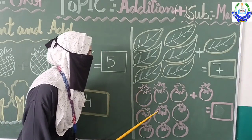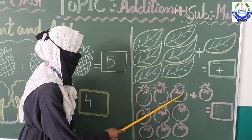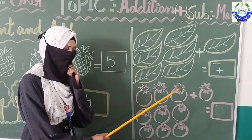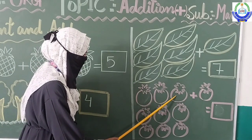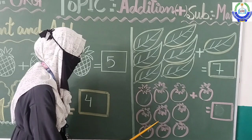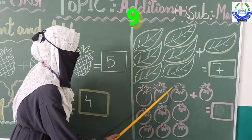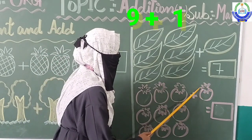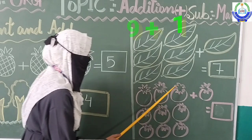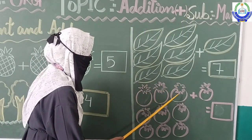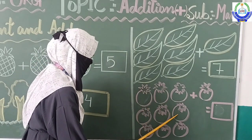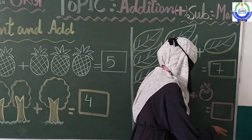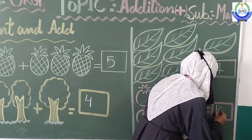These are pictures of tomatoes. How many tomatoes are there? Let's count them: 1, 2, 3, 4, 5, 6, 7, 8, 9 — there are 9 tomatoes. Plus 1 more tomato. Let's count them again: 1, 2, 3, 4, 5, 6, 7, 8, 9, and 10. So we will write here: 10.